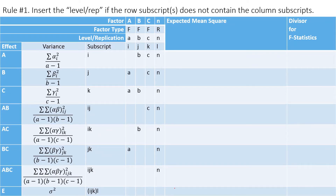Rule Number One: look at the subscript columns — columns A, B, C, and n. If the row subscript does not contain the column subscript, type that level or replication. For example, row subscript i does not contain j, so we type b here. Row subscript i does not contain k, so we type c here. Row subscript i does not contain l, so we type n here.